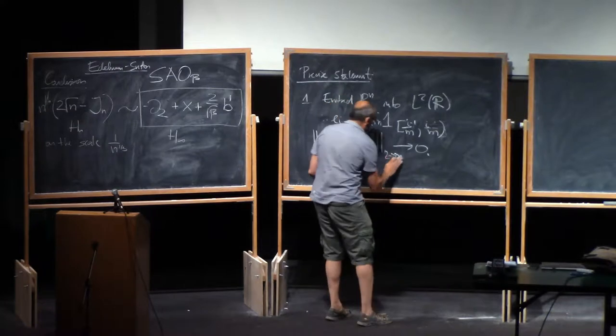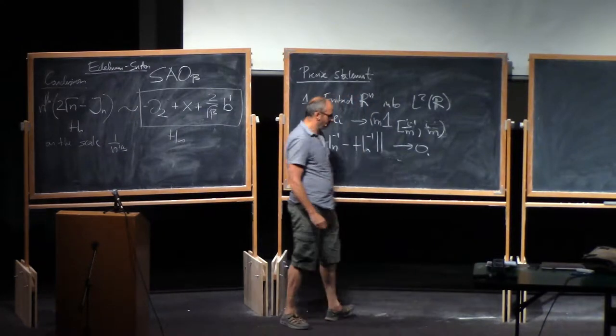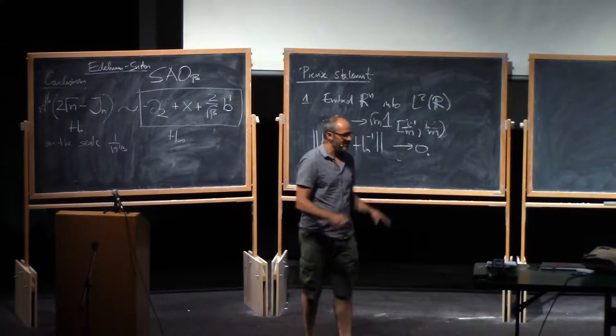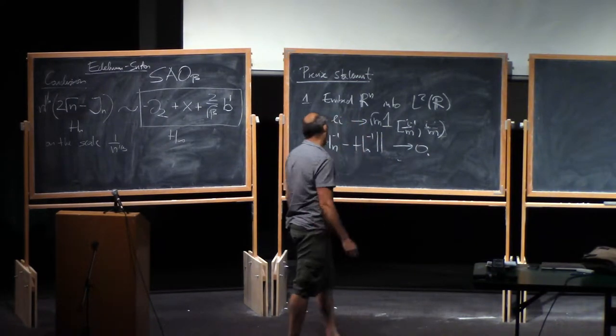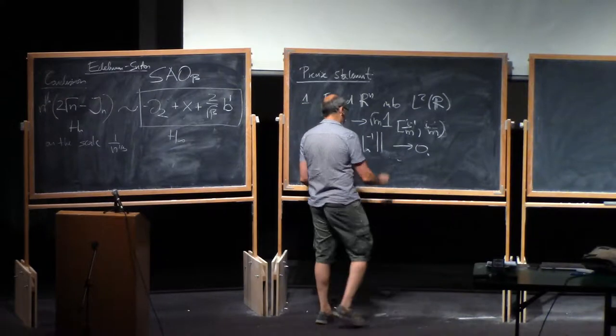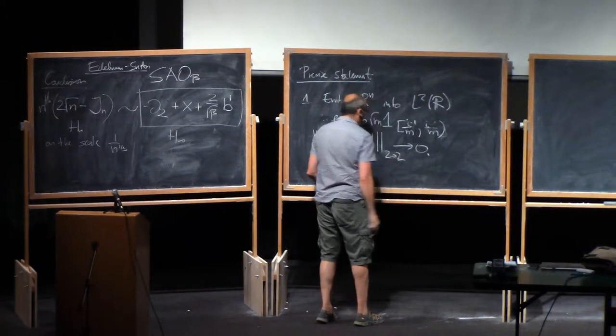Two to two norm. So it's the maximum norm of what it takes in an L2 ball of radius one. Maximum L2 norm. This is also called the operator norm.